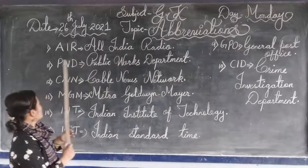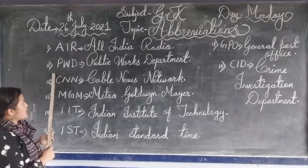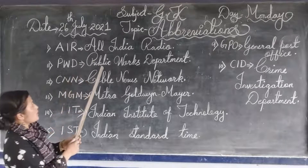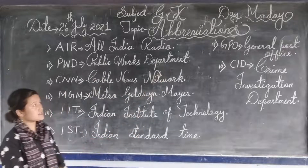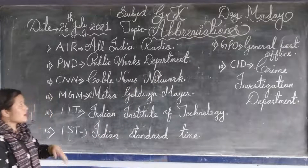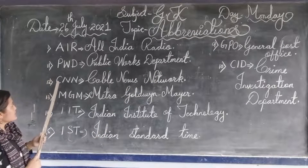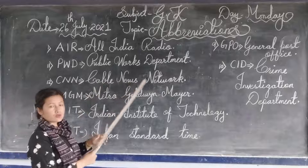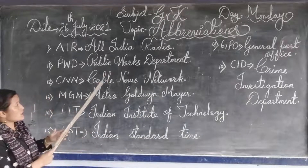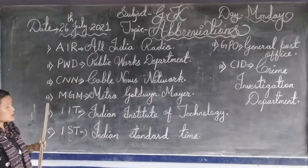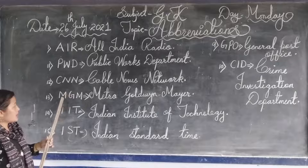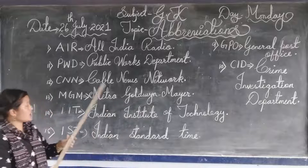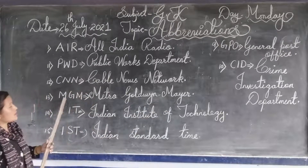Now here comes number 11 — P-I-D. The full form of P-I-D is Public Works Department. Now here comes the twelfth one: C-N-N. The full form of C-N-N is Cable News Network. Now the thirteenth one is M-G-M — Metro-Goldwyn-Mayer. The full form of M-G-M is Metro-Goldwyn-Mayer.